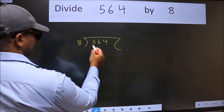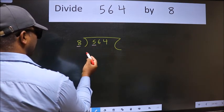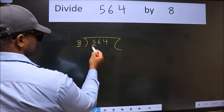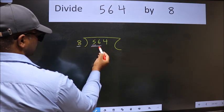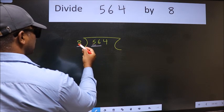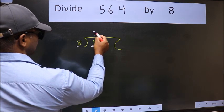Here we have 5 and here 8. 5 is smaller than 8. So take two numbers, 56. When do we get 56 in 8 table? 8 times 7 is 56.